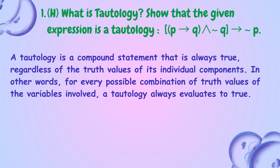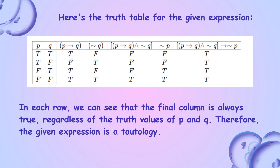What is a tautology? Show that the given expression is a tautology. A tautology is a compound statement that is always true, regardless of the truth values of its individual components. In other words, for every possible combination of truth values of the variables involved, a tautology always evaluates to true. Here's the truth table for the given expression. In each row, the final column is always true regardless of the truth values of P and Q. Therefore, the given expression is a tautology.